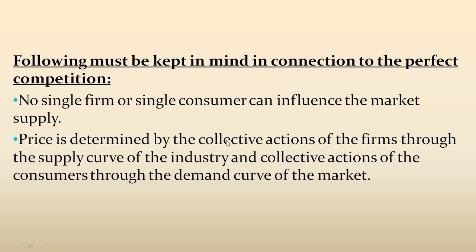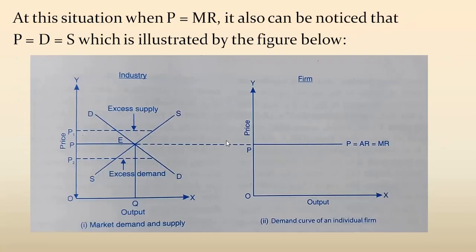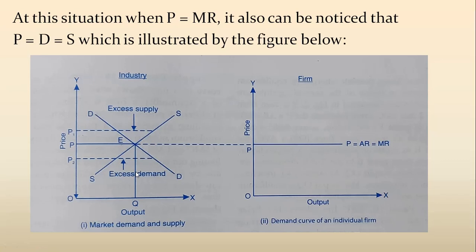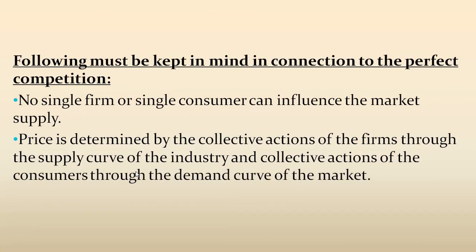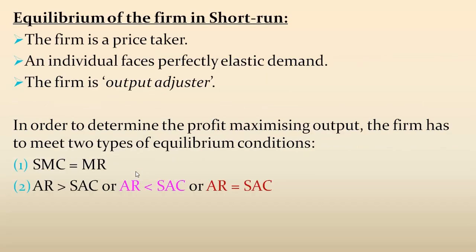Through the interaction of demand and supply we get the exact equilibrium level of output. Looking at this particular graph — what is it depicting? This diagram depicts the equilibrium situation, which you can also call the market mechanism where demand equals supply. I hope you are having a sense of déjà vu looking at this diagram. Now, after knowing these two points, let us move forward to the equilibrium of the firm in the short run.